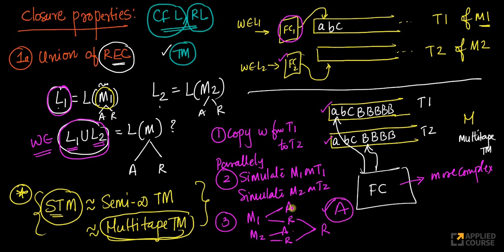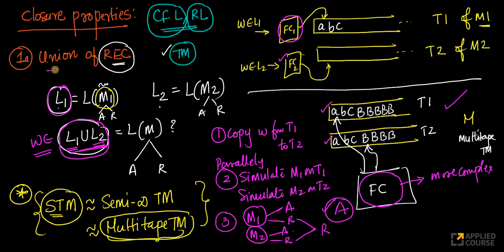I am guaranteed that this machine halts because M1 and M2 halt — when I simulate them on tape 1 and tape 2, I am guaranteed they halt and reach one of two states. Union of recursive languages is closed because I can construct a multi-tape Turing machine M that accepts if M1 accepts or M2 accepts, and multi-tape TMs are equivalent to standard TMs.